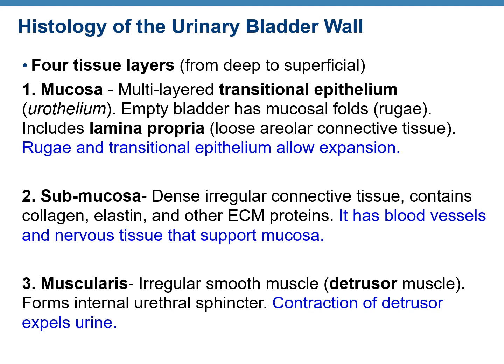The second layer is the submucosa, made up of dense irregular connective tissue. It contains collagen, elastin, and other extracellular matrix proteins. Its function is to provide blood vessels and nervous tissue that support the mucosa.